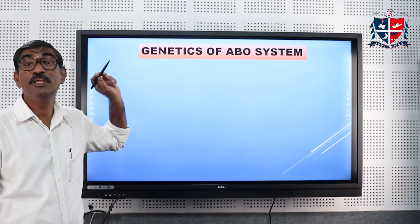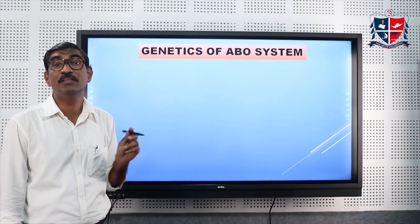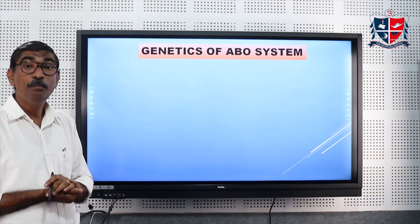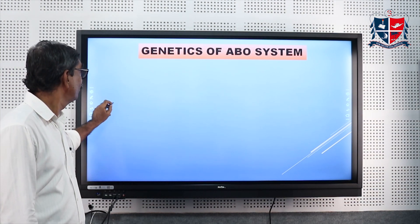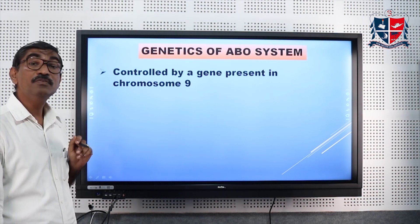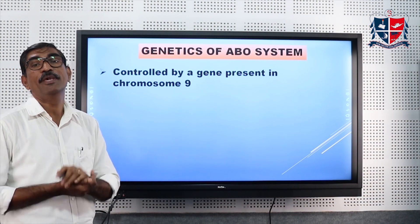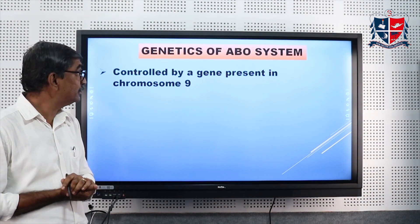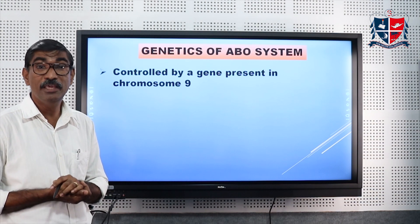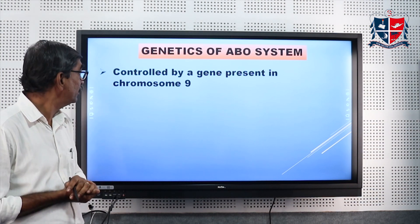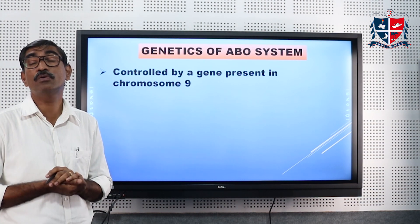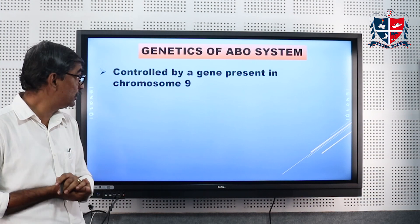Now we will see the genetics behind the ABO blood group system. Blood grouping is determined by a gene present on chromosome number 9; it is an autosomal gene.